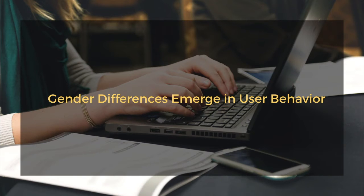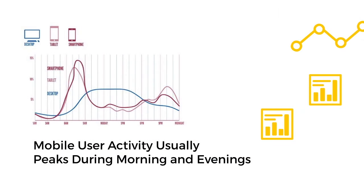Another interesting behavior: mobile user activity usually peaks during mornings and evenings. Research conducted by the Financial Times shows that mobile user activity usually peaks during mornings, 6am to 9am, and evenings, 6pm to 11pm. While desktop users perform their online activities mostly during working hours, 9am to 6pm. Taking into account these timing differences, the point is that both mobile and desktop users might be on your website, but what they're doing there is a different story and we're going to uncover it in just a few moments.